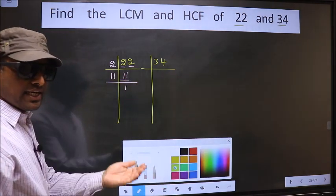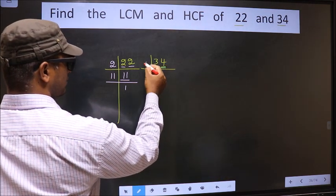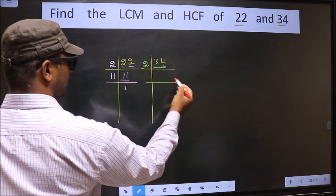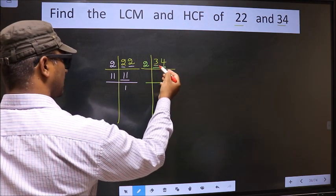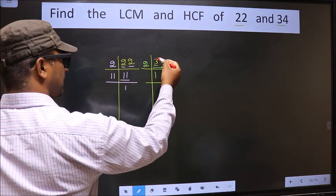Now the other number, 34. Last digit 4, even, so we take 2 here. The first number 3, a number close to 3 in the 2 table is 2 once, 2. 3 minus 2, 1, 1 carried forward making it 14.